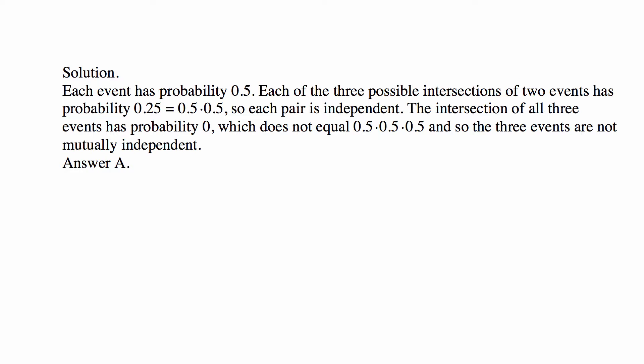The intersection of all three events has probability 0, which does not equal 0.5 times 0.5 times 0.5, and so the three events are not mutually independent. So the answer is A — each pair is independent, but not all three.